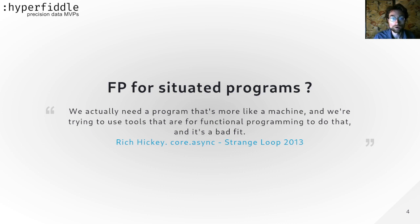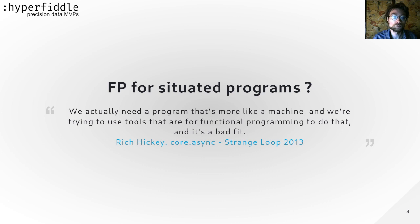We actually need a program that's more like a machine, and we're trying to use tools that offer functional programming to do that — and it's a bad fit. So that's exactly what we're going to do: use functional programming to make situated programs. I'm going to show you that Rich is wrong about it — functional programming is actually a very good fit for situated programs.